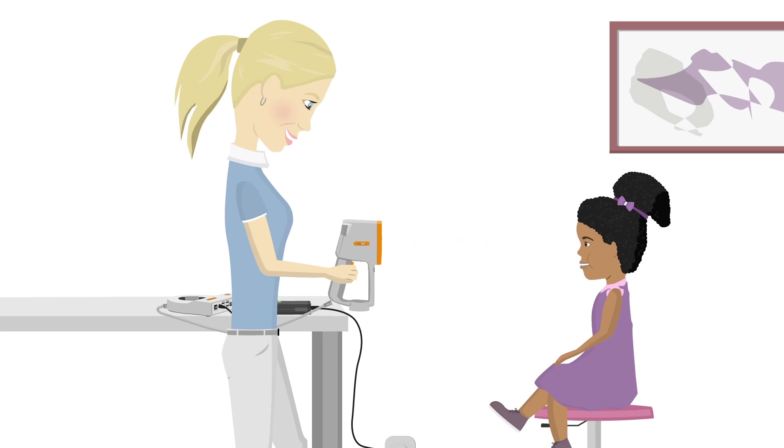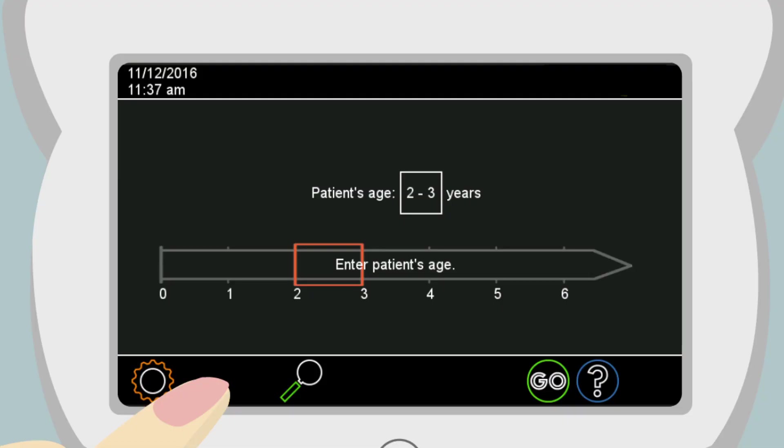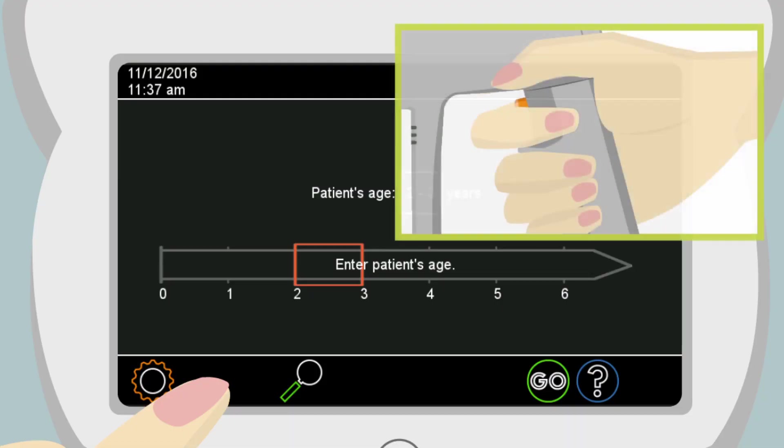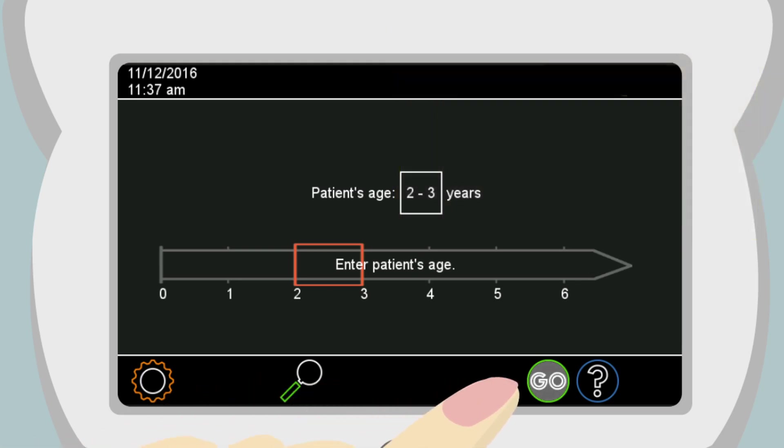Babies are best screened while being held over a parent's shoulder. The measurement can be started by pressing the shutter button on the handle or touching the blinking Go button in the navigation bar.